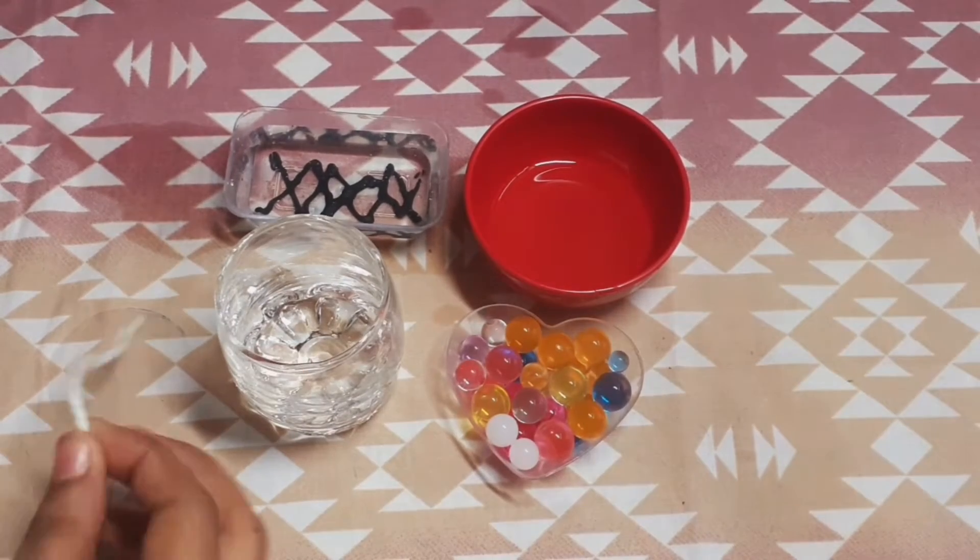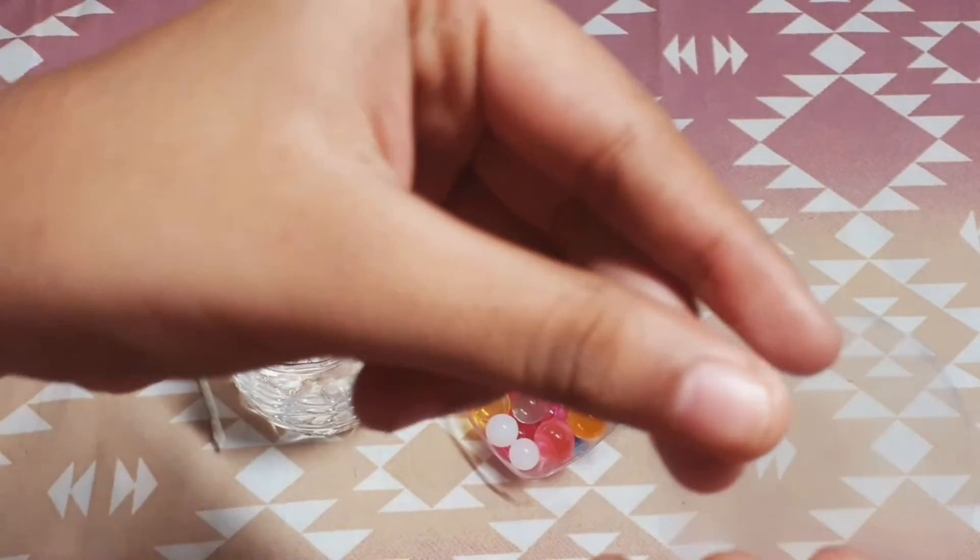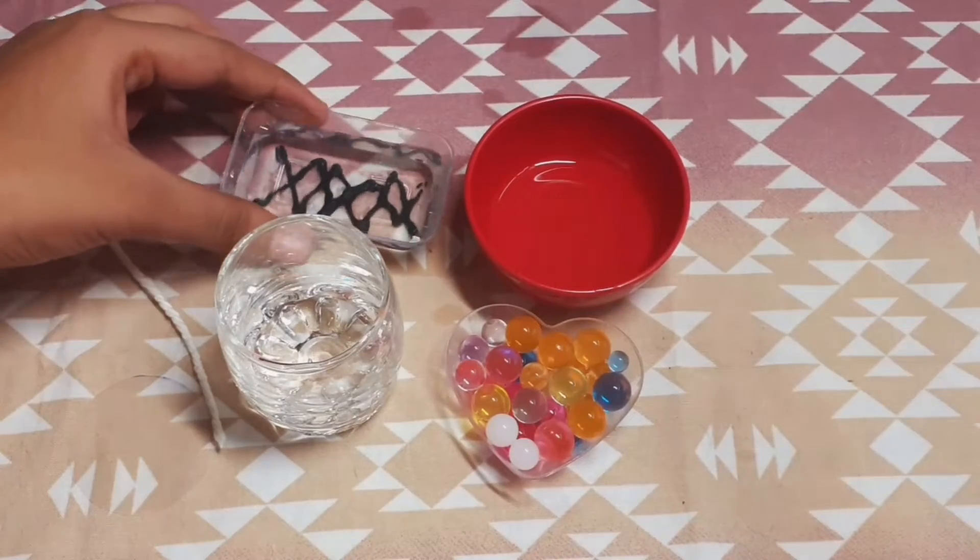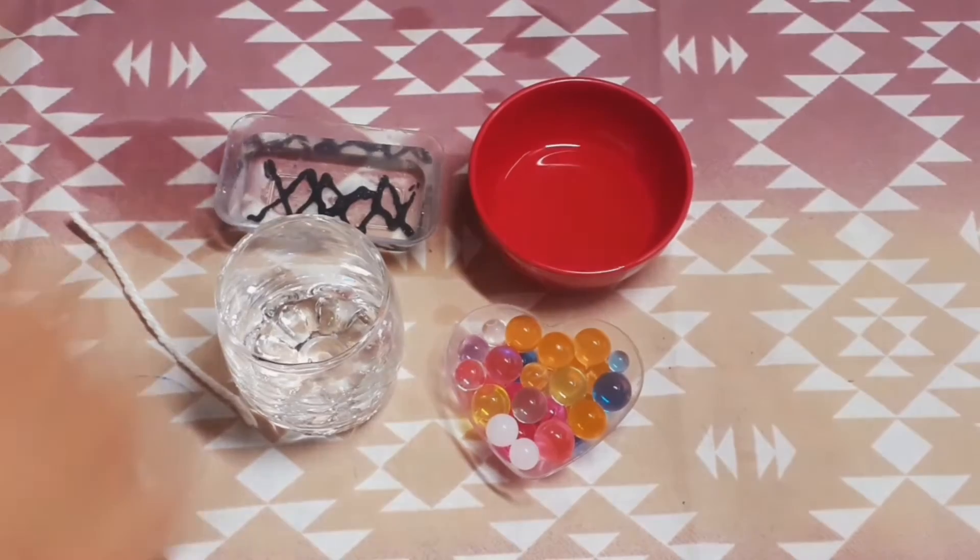For the water candles, I have taken some Orbeez, a small glass, and thread. You can also take wax candle thread and a small OHP sheet in a circle, some water, and some coconut oil. You can use any other oil also.